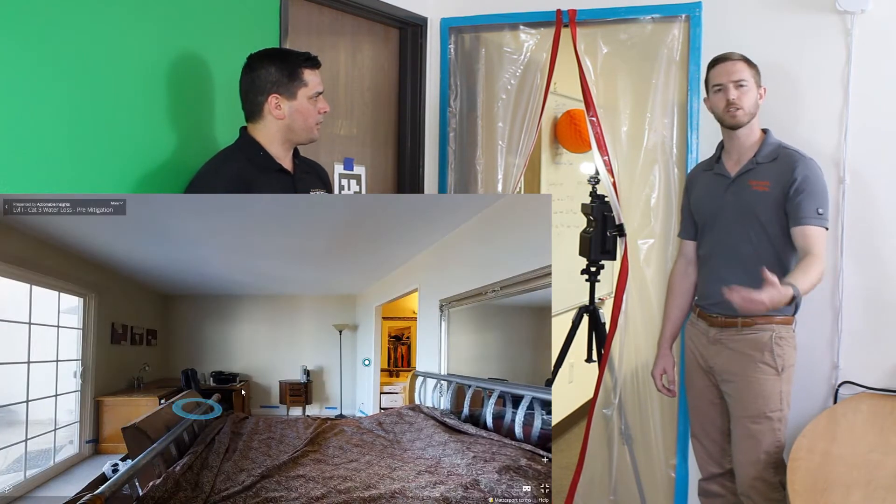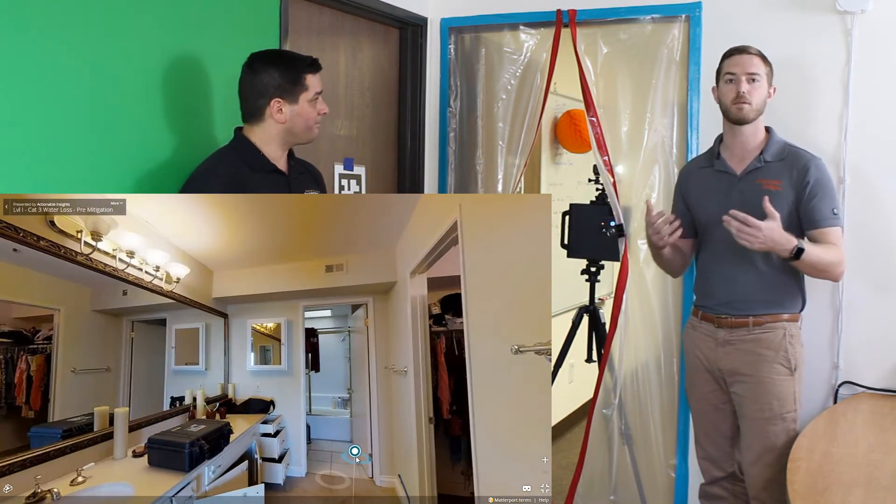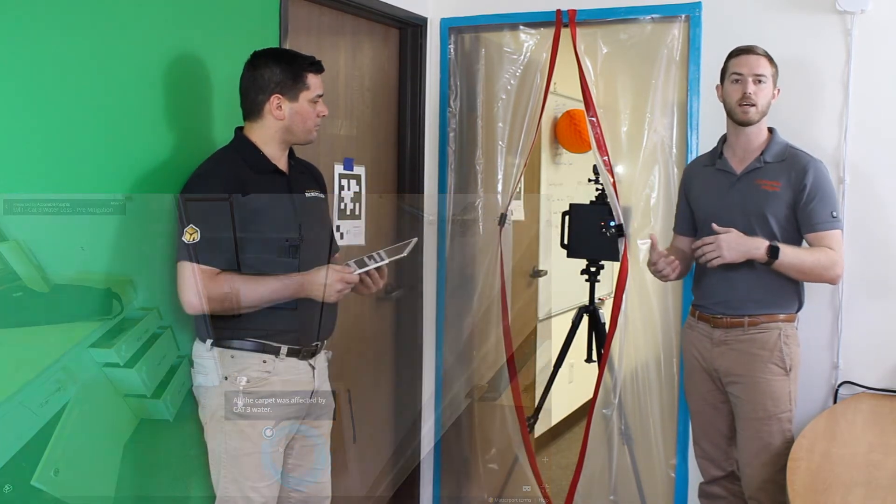Yeah, so when you're an estimator or an adjuster trying to scope a loss, it's really important to have both pre-mitigation and post-mitigation scans. Pre-mitigation shows you exactly what the house looked like at the time of the loss - when everything's flooded, you know exactly what the house looked like.